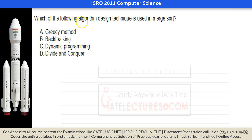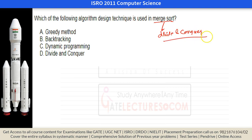Merge sort uses the divide and conquer algorithm design technique. The array is recursively divided into two halves and then merged from the bottom up. Note that quick sort also uses divide and conquer, but divides based on a pivot element, whereas merge sort divides blindly.